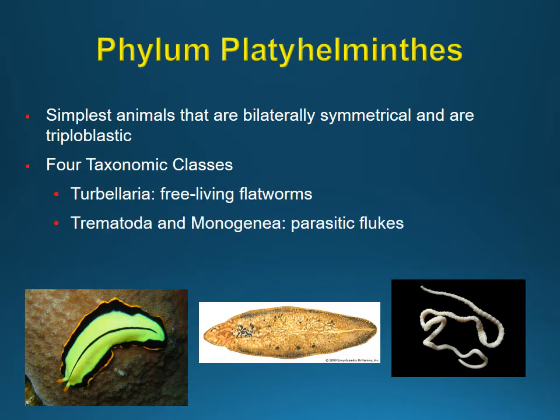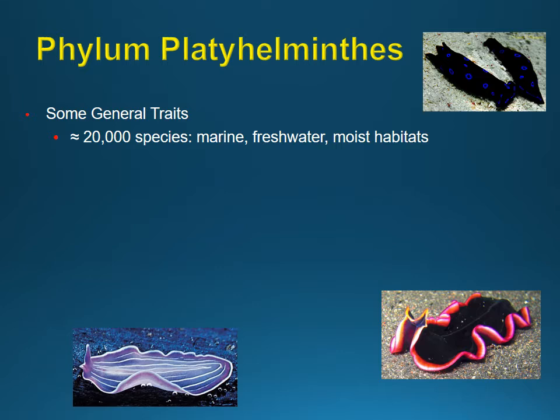So you get turbellarians - the free-living ones, the fun and cute ones. The trematodes and monogeneans, which are parasitic in nature. And cestodes, which are also parasitic - the tapeworms. General traits: a lot of species, an impressive number, like 20,000. When you're a parasite you'll have a lot of species because they'll be very specialized, sometimes for one specific species of bird or mammal, leading to new species from that specialization.